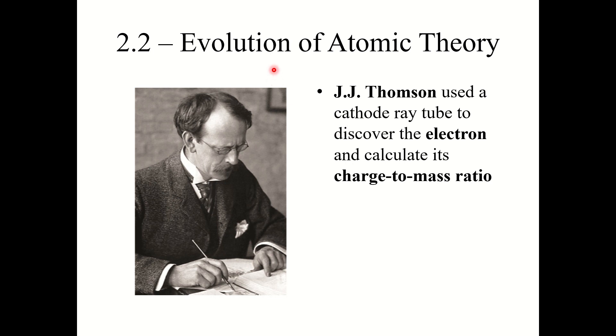Section 2.2: Evolution of Atomic Theory. We're going to start by looking at JJ Thompson. He was a British physicist and he used a cathode ray tube to discover the electron and calculate its charge-to-mass ratio.